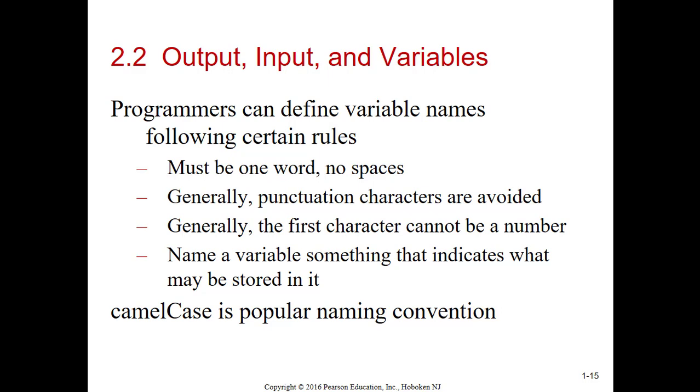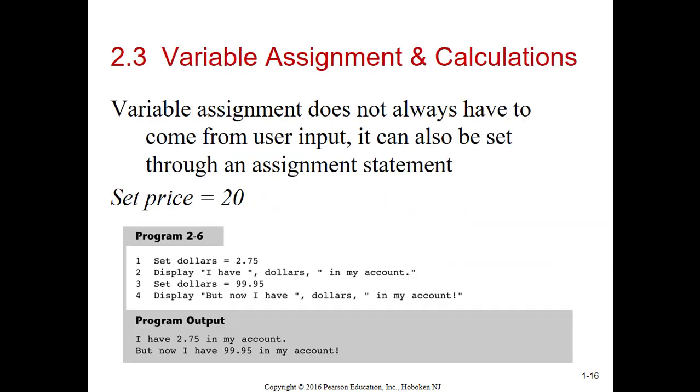We're going to use camel case as the naming convention. That's what industry standard is. Camel case is the first letter of the first word is lowercase, and the first letter of all subsequent words are uppercase, just like that example. The C in camel is lowercase and the C in case is uppercase. So if you had first name as a variable, the F would be lowercase and the N in name would be uppercase. If you don't follow camel casing, I will count off for that.